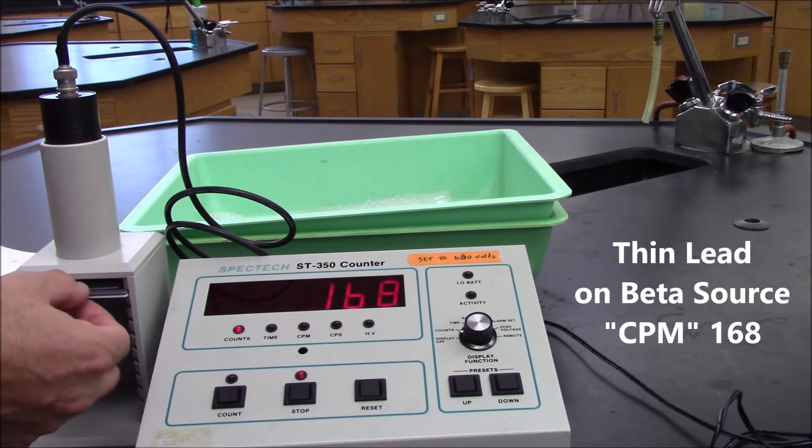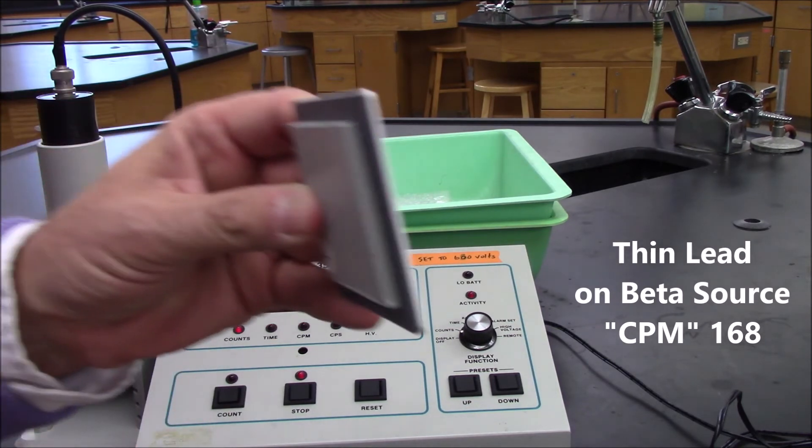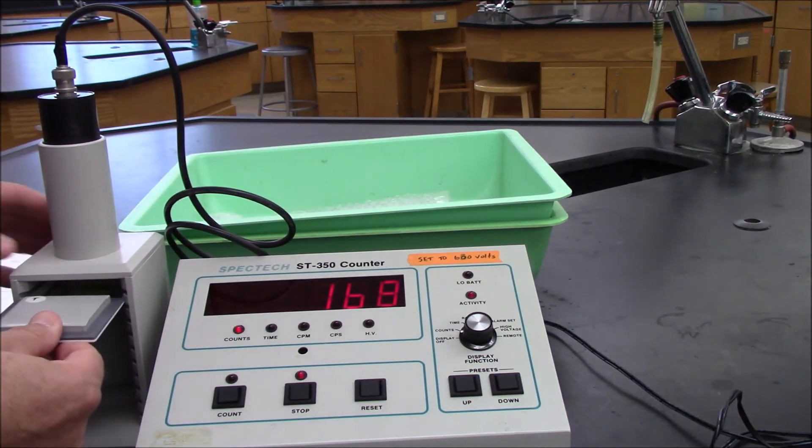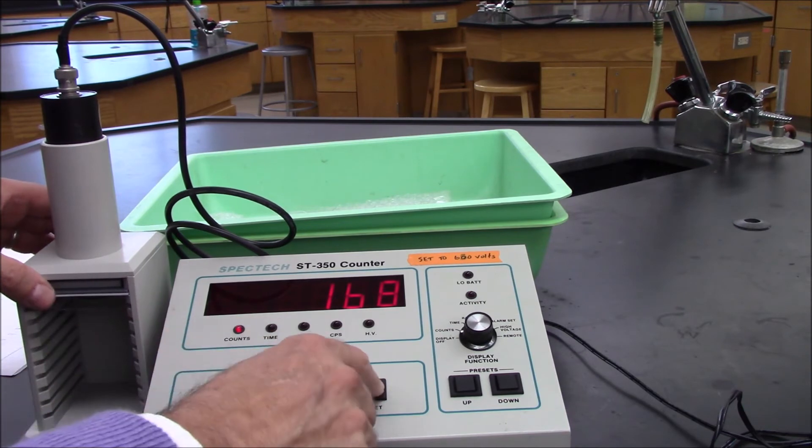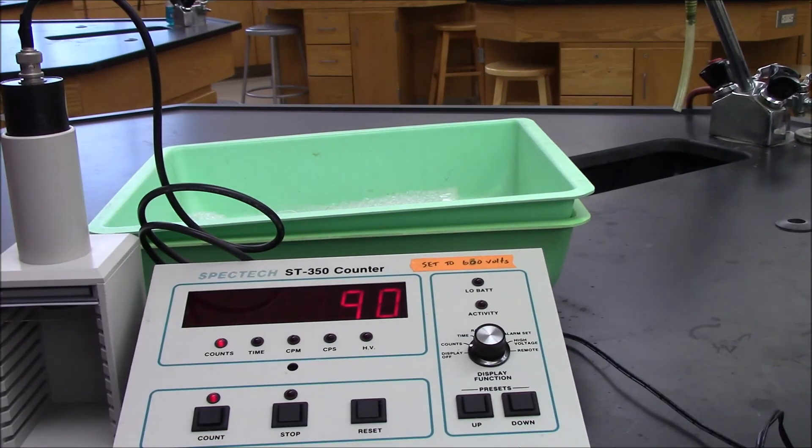So now I'm going to replace the thinner piece of lead with an extremely thick piece of lead. So now we're coming up to the end of the thick sample of lead. And you can see we've definitely reduced the amount of radioactivity getting through to the detector. And that completes the beta sample.